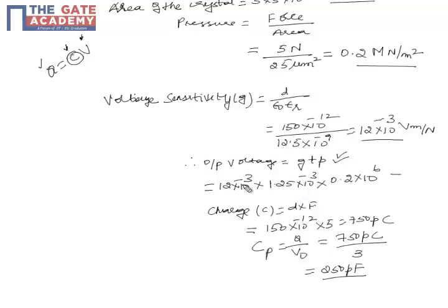So the output voltage across the crystal is 3 volts. Now using Q = CV, the charge is the product of charge sensitivity and the applied force: 150 pC/N × 5N = 750 pC. Therefore, the capacitance is 750 pC divided by 3 V, which equals 250 pF. This is the capacitance of the piezoelectric crystal.